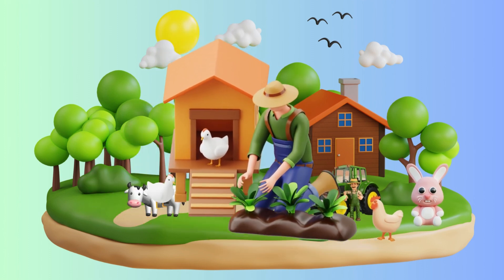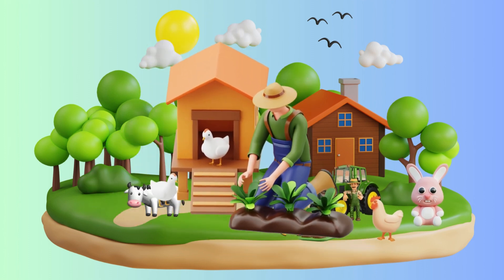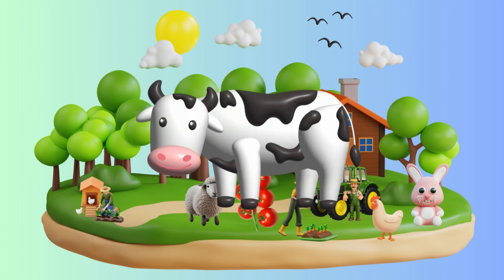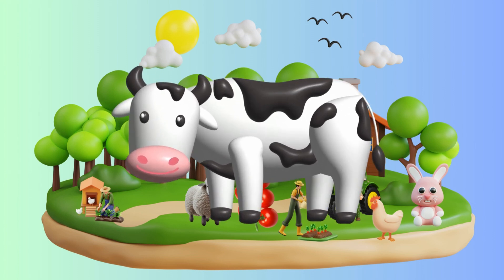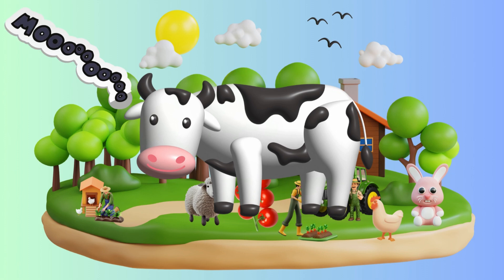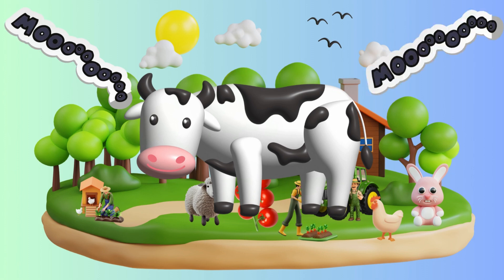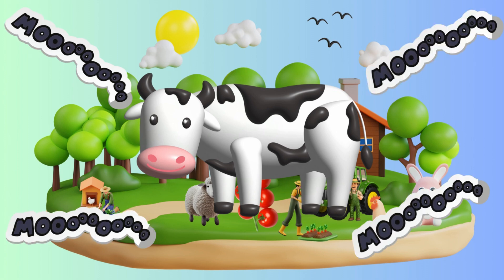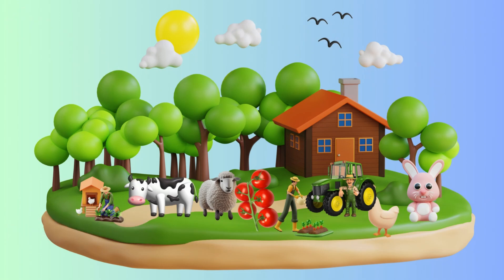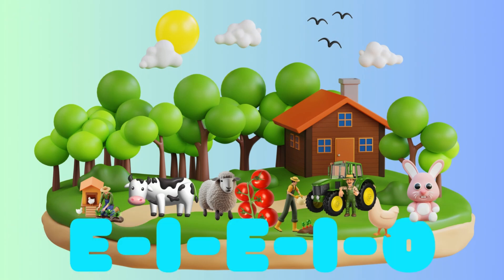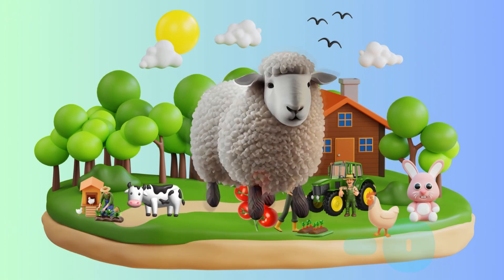Old MacDonald had a farm, E-I-E-I-O. And on that farm he had a cow, E-I-E-I-O. With a moo moo here and a moo moo there, here a moo, there a moo, everywhere a moo moo. Old MacDonald had a farm, E-I-E-I-O. And on that farm...